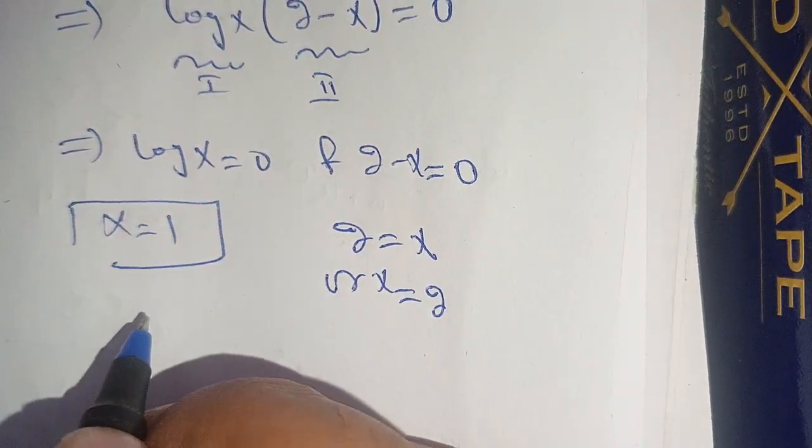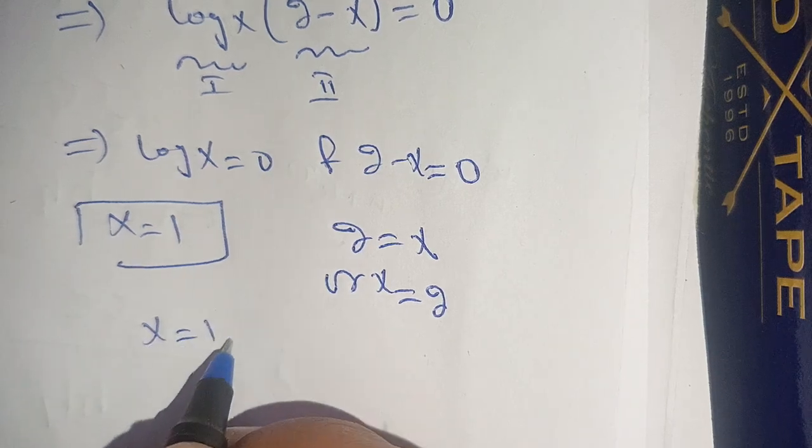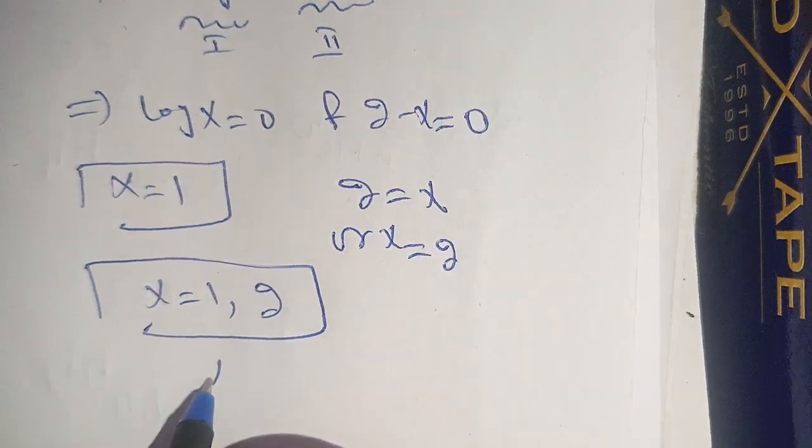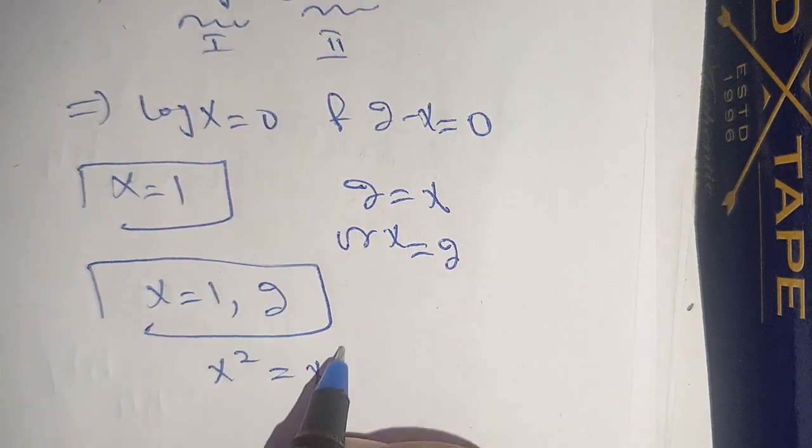Here are two values. First value is 1 and second value is 2, which satisfy our exponential equation x² = x^x.